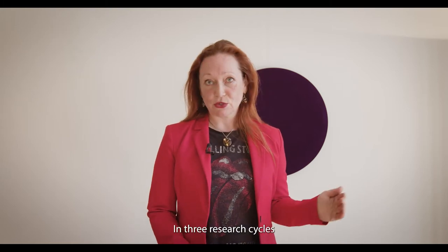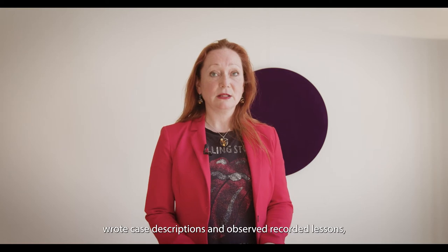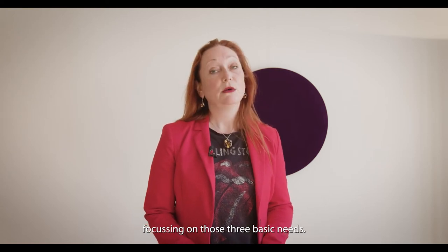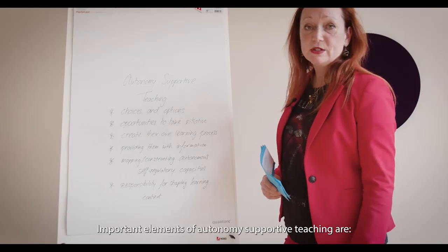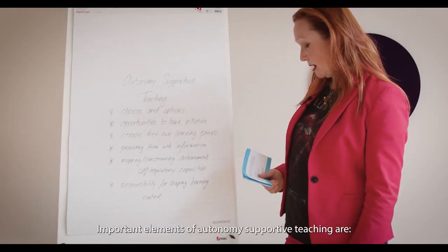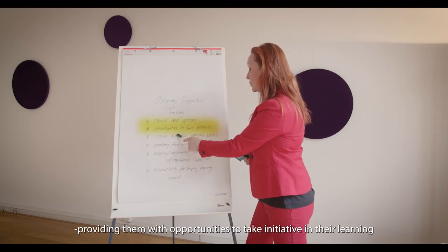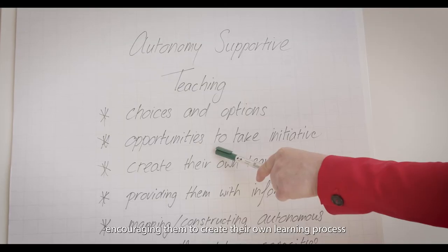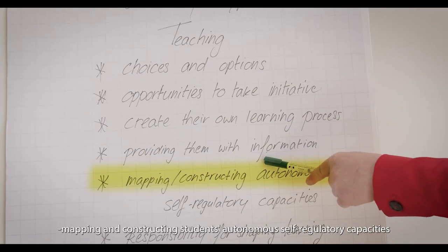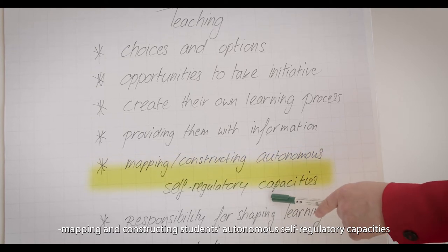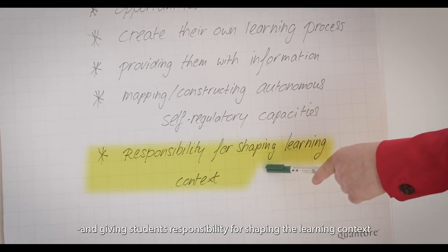In three research cycles, I designed and carried out teaching strategies, wrote case descriptions and observed recorded lessons, focusing on the three basic needs. The important elements of autonomy supportive teaching are: giving students choices and options where possible, providing opportunities to take initiative in their learning, encouraging them to create their own learning process, providing them with information, mapping and constructing autonomous self-regulatory capacities, and giving them responsibility for shaping the learning context.